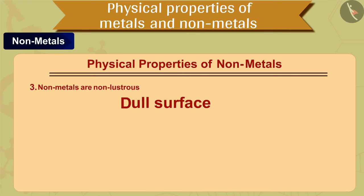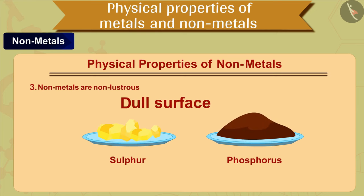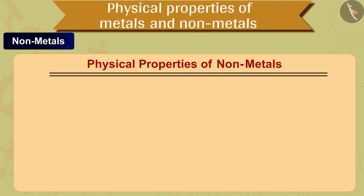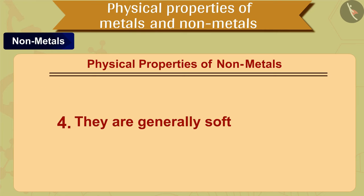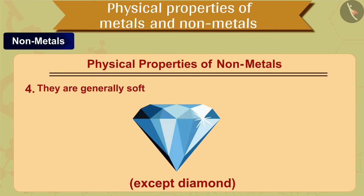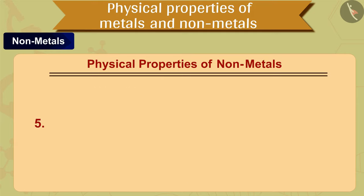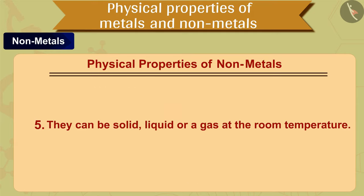The third property of non-metals is that they are non-lustrous, meaning they have a dull surface. For example, sulfur and phosphorus. The fourth property is that non-metals are generally soft, except diamond.